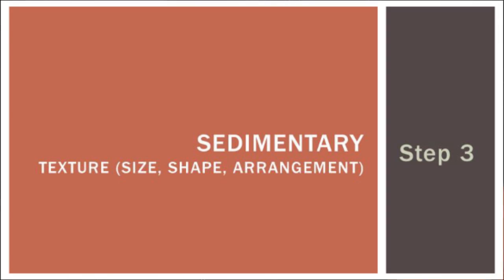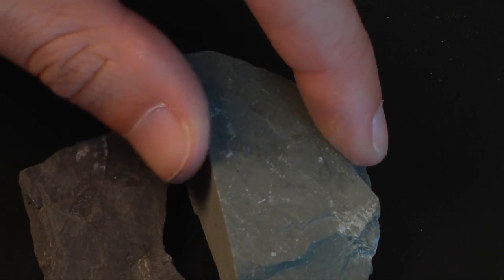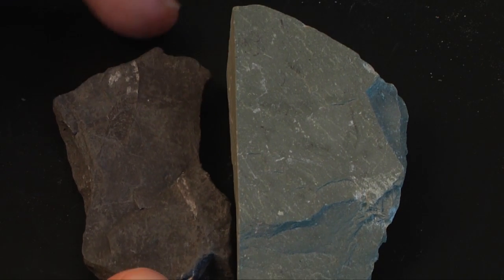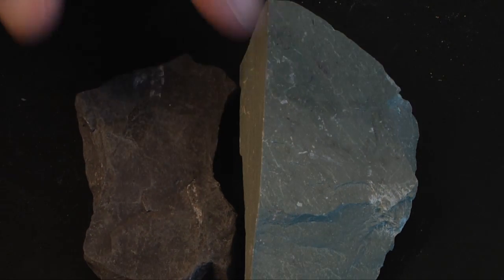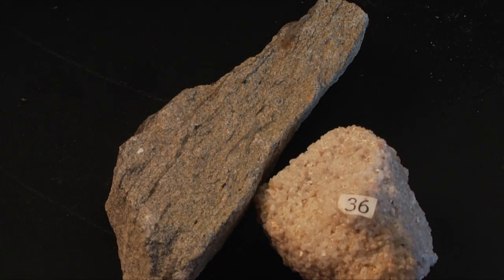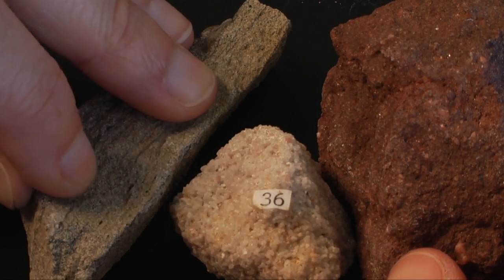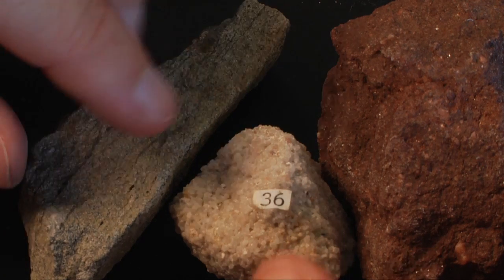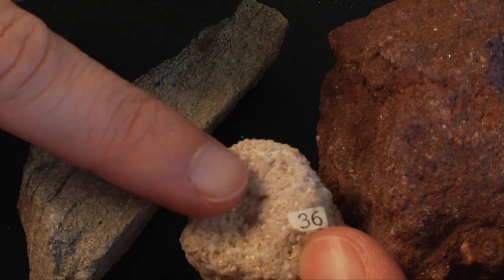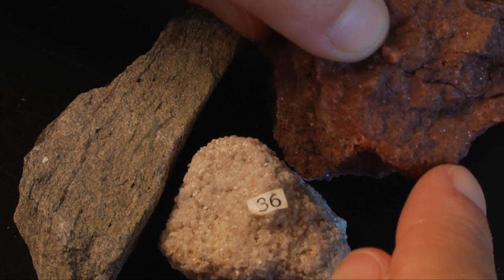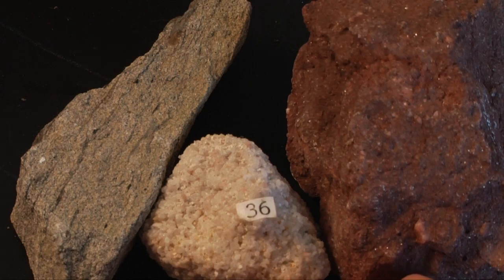To get into more detail with the texture, we can also categorize these by size more specifically. The grain sizes are: mud, which would be the finest — so fine you can't see any of the crystals at all. Then we have sand-sized particles, which range in size from just barely visible, where you can feel them and it feels gritty on your fingertips, to a little bit larger where you can actually start to see them.